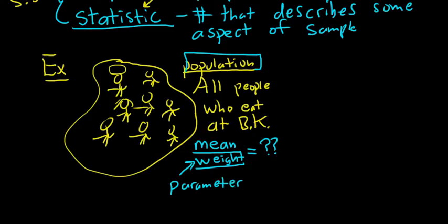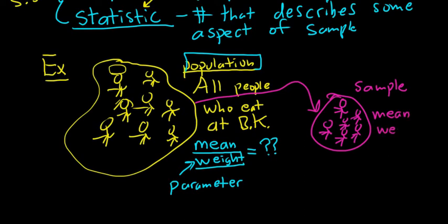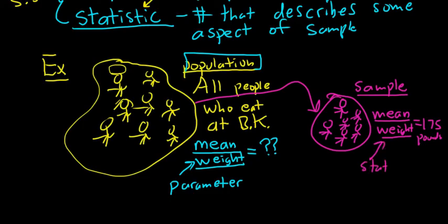So what we do is take some of the people from the population — here are some of the people who eat at Burger King, maybe 30 people. When you take some people from the population, that's called a sample. We can then ask: what is the mean weight of these people? With 30 people we can put them on scales, add up their weights, and divide by 30. Let's say it's 175 pounds — that's the mean weight of the sample, and it's called a statistic.